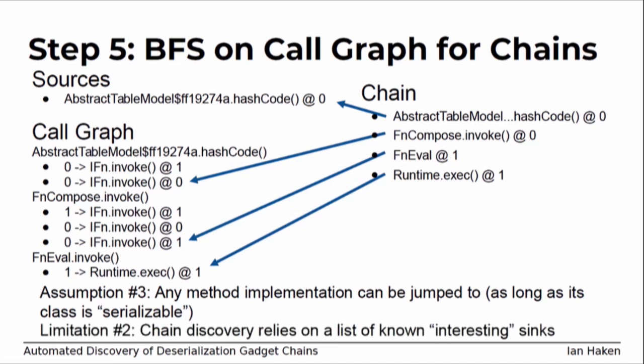One last limitation: this relies on knowing what are interesting sinks to output gadget chains for. There's lots of good stuff in the JDK — reading files, writing files, runtime.exec, opening a URL, doing DNS lookups, sleeping. Adding more to the list of interesting sinks is a way to improve this tool, but even with a limited set you get pretty far. The important thing is all these parameters — what counts as a serializable class, what the known entry points are — are configurable for different libraries like JRE deserialization, XStream, and Jackson.